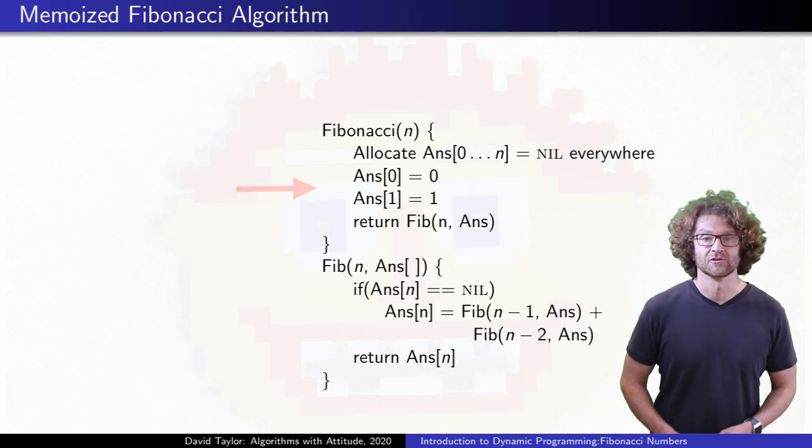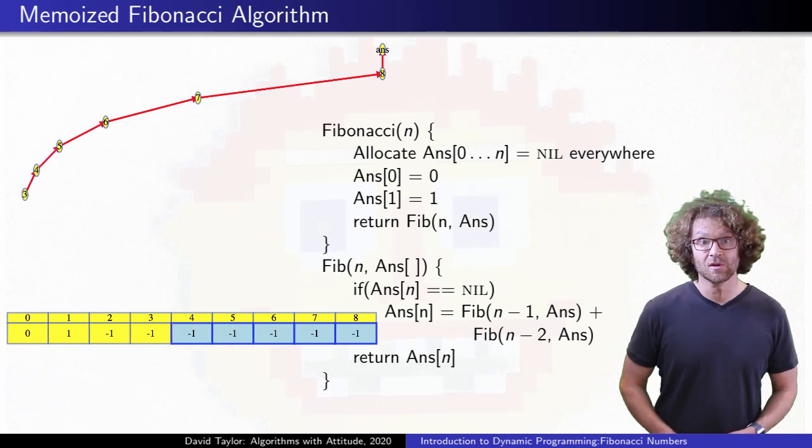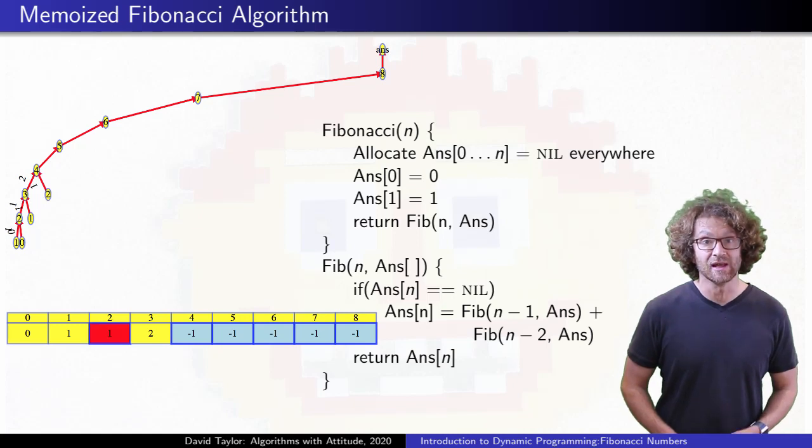Let's see what that does. The recursion tree starts filling in the same as before, and within the table, those calls start on the right hand side. Smaller and smaller values are called, and once you get down to the base cases, the table starts filling in from the left, in order.